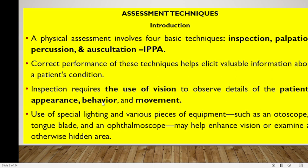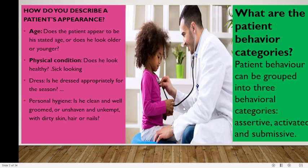Inspection requires the use of vision to observe details of a patient's behavior, appearance, and movement. We use special lighting and various pieces of equipment such as an otoscope in the case of the ear, a tongue blade for the floor of the mouth, and an ophthalmoscope for the eye, to help enhance vision and examine otherwise hidden areas.